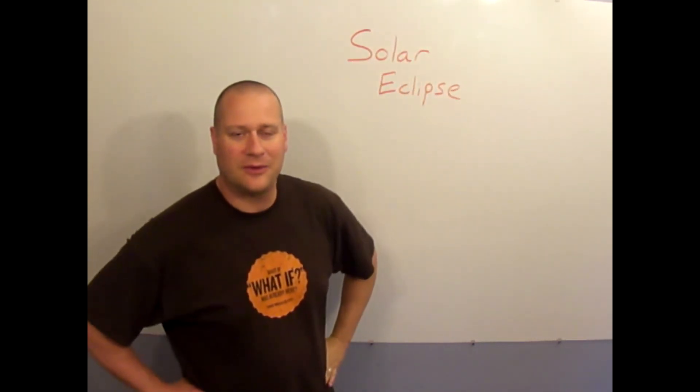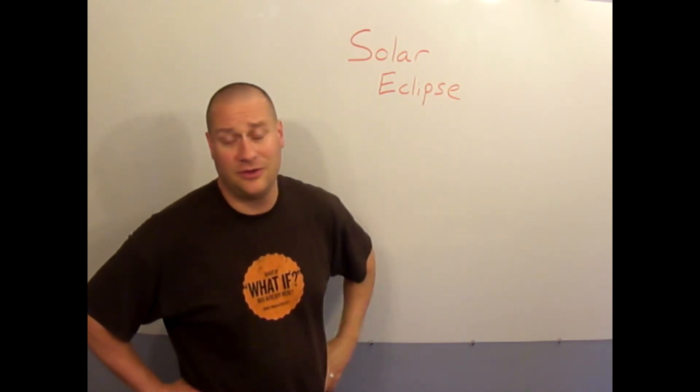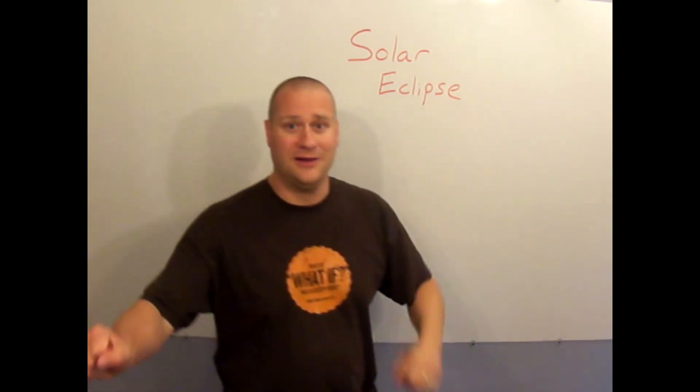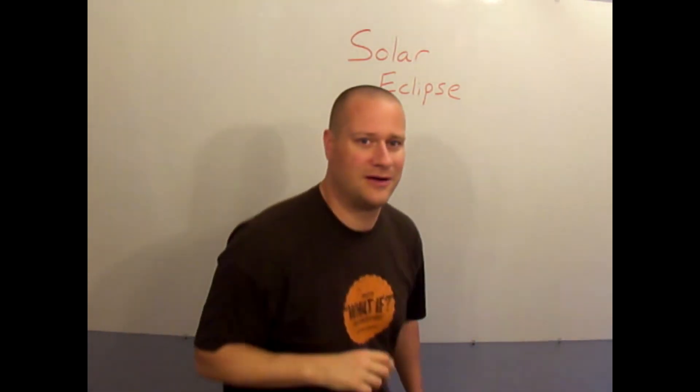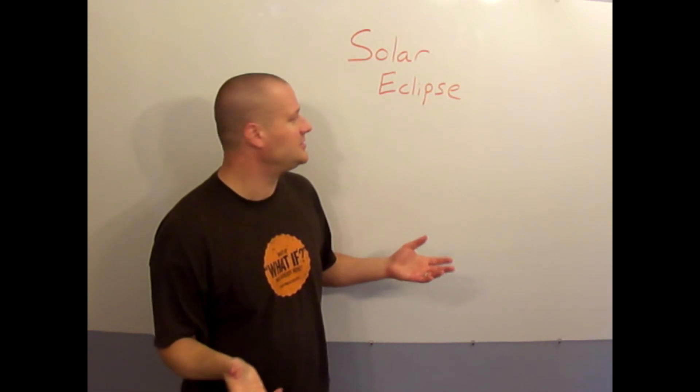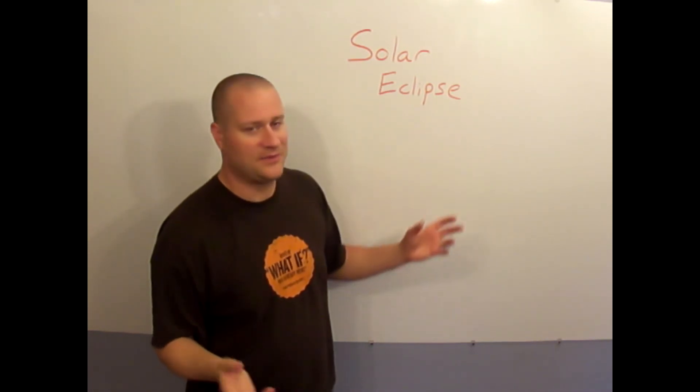That was called a full solar eclipse. You could have a partial solar eclipse where maybe it just comes slightly across and blocks part of the view.